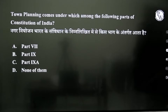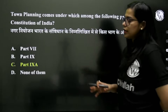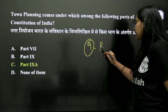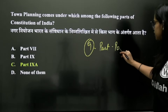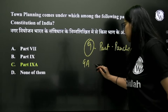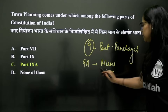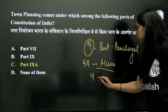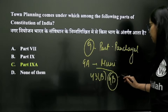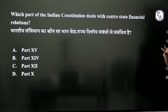Town planning — under which part does it come? Part 9 is for Panchayat. If Part 9A is discussed, that is for Municipal Corporation. Similarly, if Article 43B or Part 9B is asked about, that is for Cooperative Societies.